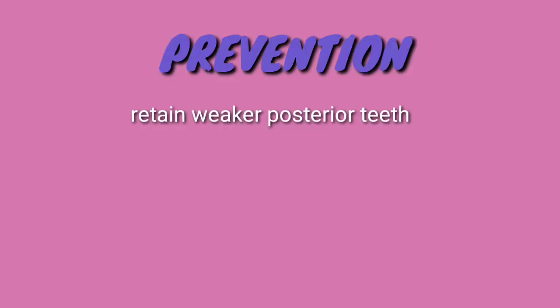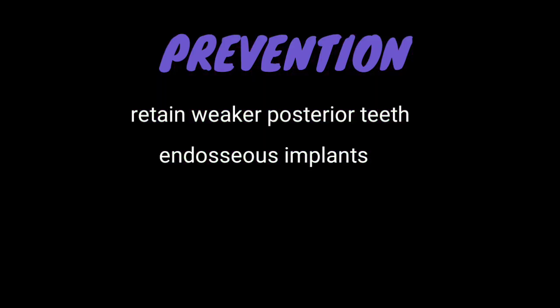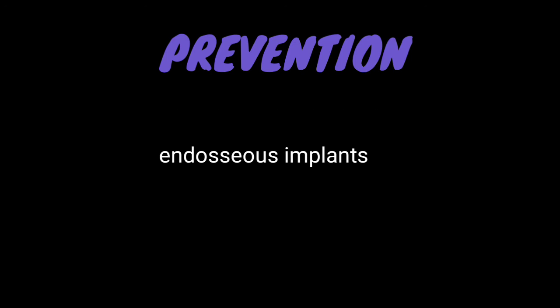Finally, the prevention. We have to retain as many posterior teeth as possible using endodontic as well as periodontal techniques. We can fabricate fixed prosthesis using endosseous implants in the lower posterior region, as well as use tooth-supported overdentures in the lower arch. Regular recall visits and checkups with frequent relining can also be provided.